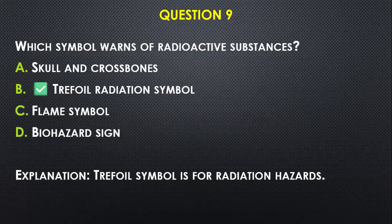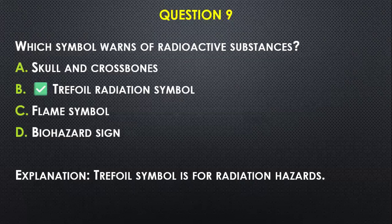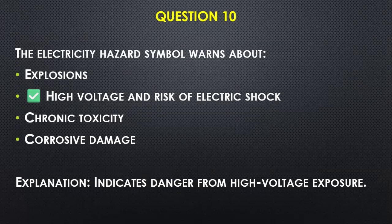Question number nine: Which symbol warns of radioactive substances? A) skull and crossbones — that's acute toxicity, B) the trefoil radiation symbol, C) flame symbol, D) biohazard symbol. I will go with the trefoil radiation symbol; you always see it anywhere you have radioactive substances or X-rays.